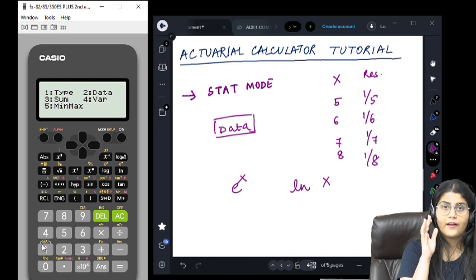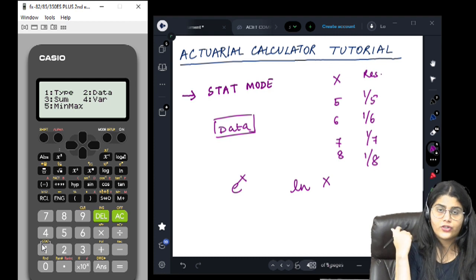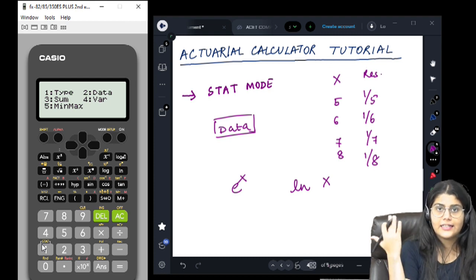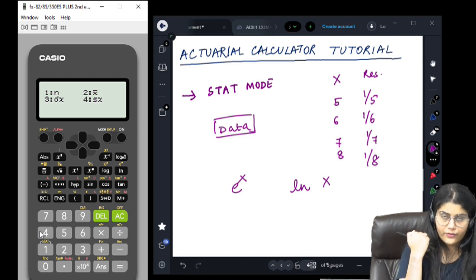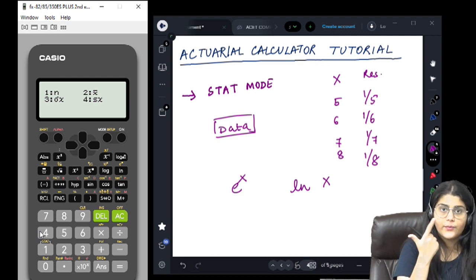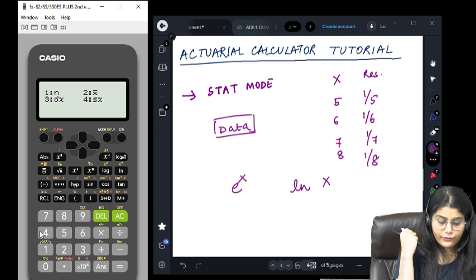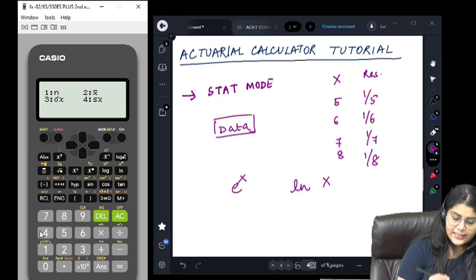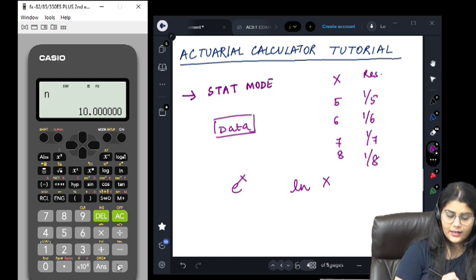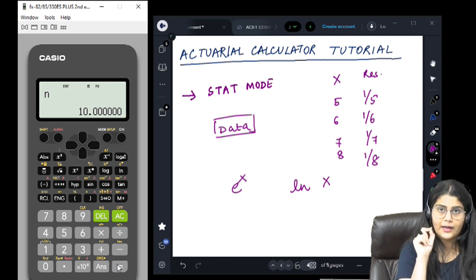Going back to our stat mode, we have VAR, which is basically all the variance related calculations, all the central tendency and dispersion related calculations. We have n, which is number of data points. We have x bar, which is the sample mean. We have sigma x, which is the population standard deviation, and we have sx, which is the sample standard deviation. As we had seen, we had entered 10 data points, so our n is coming as 10.